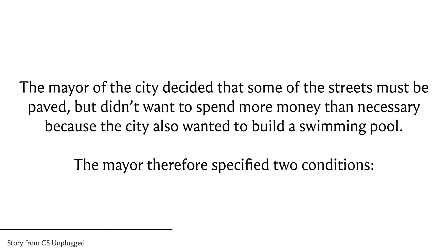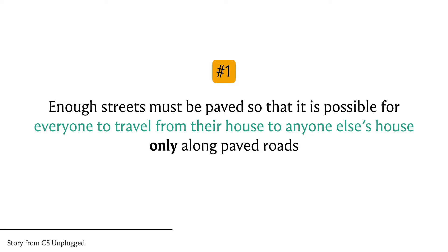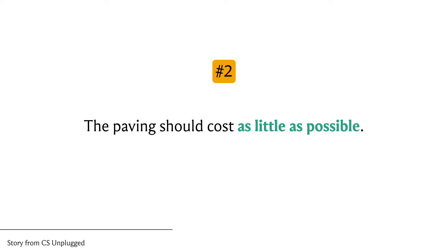The mayor therefore specified the following two conditions. The first one says enough streets must be paved so that it's possible for everyone to travel from their house to anyone else's house only along paved roads. So you want some sort of a connected structure to emerge. The second condition is that the paving should cost as little as possible.